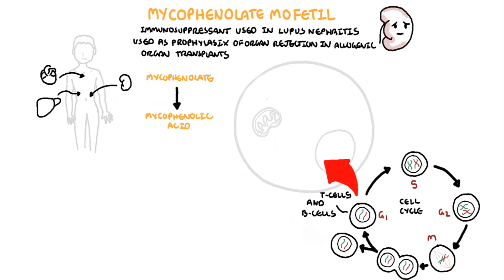Mycophenolate works by inhibiting IMP-dehydrogenase within the mitochondria. Mycophenolate has a preferential inhibition to IMP-DH2, the rate-limiting step in the de novo synthesis of guanine nucleotides from IMP in B and T lymphocytes.